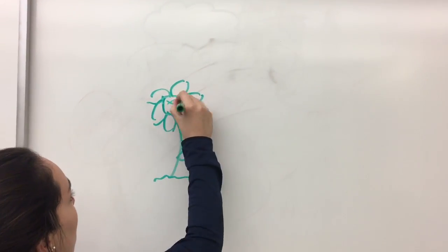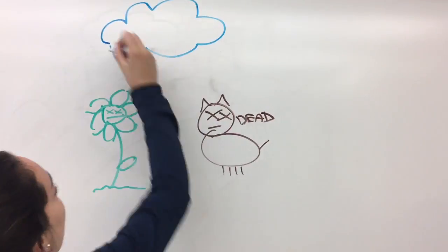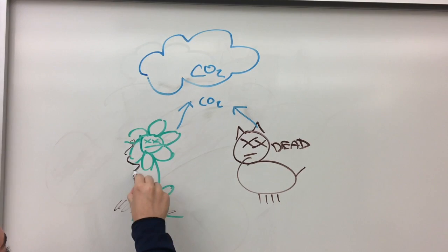When the plant itself or the animal that consumed it dies, decomposers such as fungus or decomposing bacteria form on the bodies and the decomposers release the carbon back to the atmosphere, allowing for the cycle to continue.